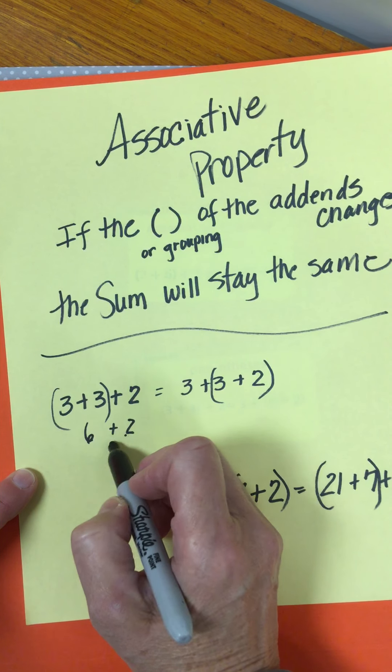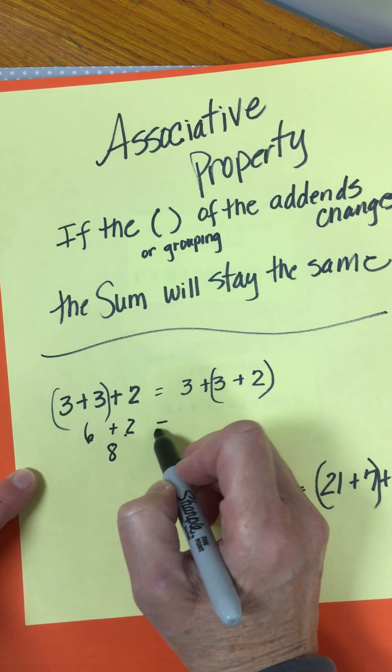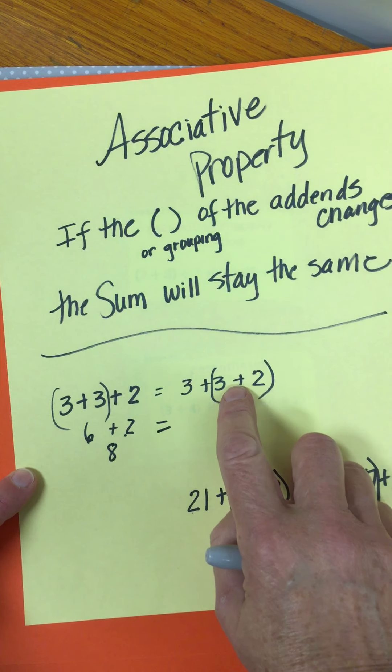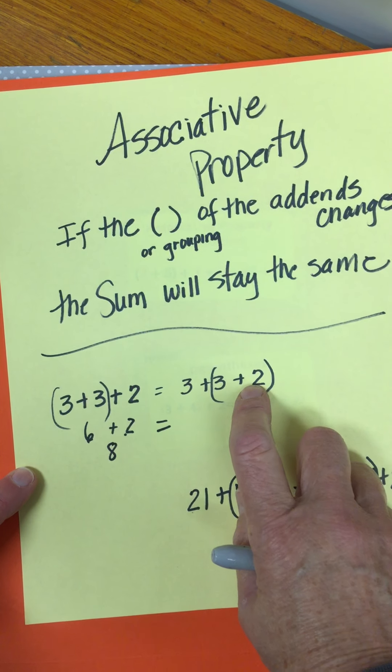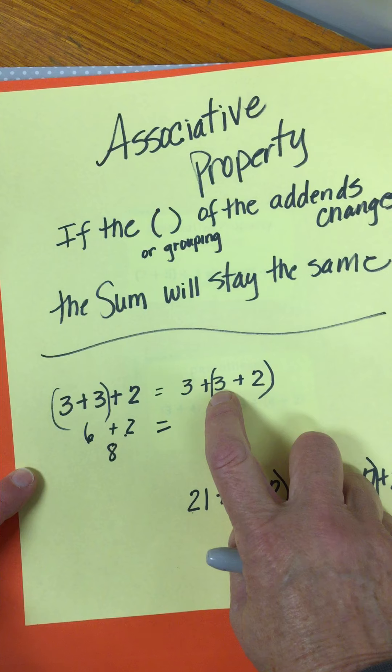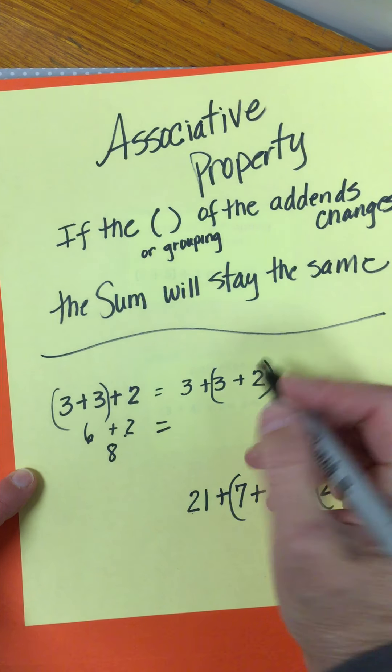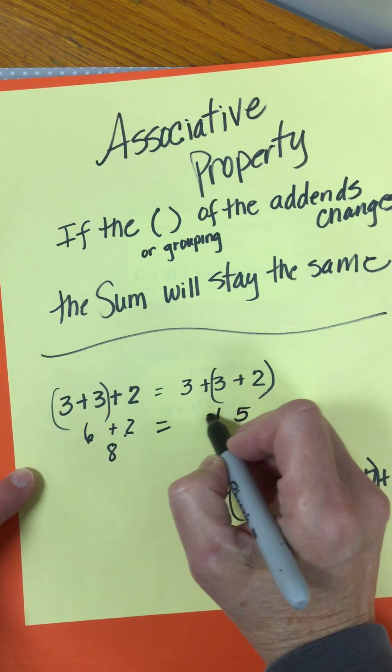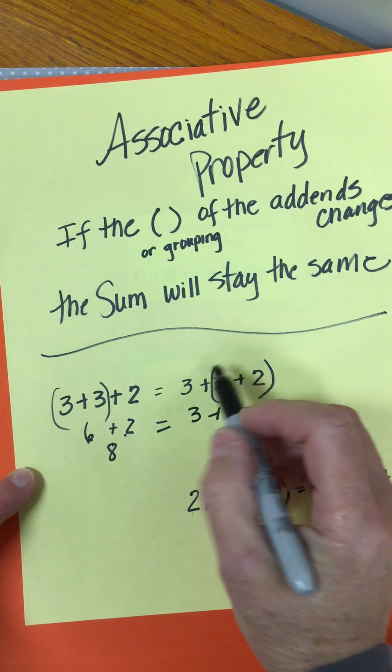So mental math, 6 plus 2 is 8. Okay, so let's try it now on the other side. The parentheses are over here. So now I would start with those parentheses. 3 plus 2, mental math, 5 plus the 3 that I need to bring down. So mental math, 3 plus 5, 8.